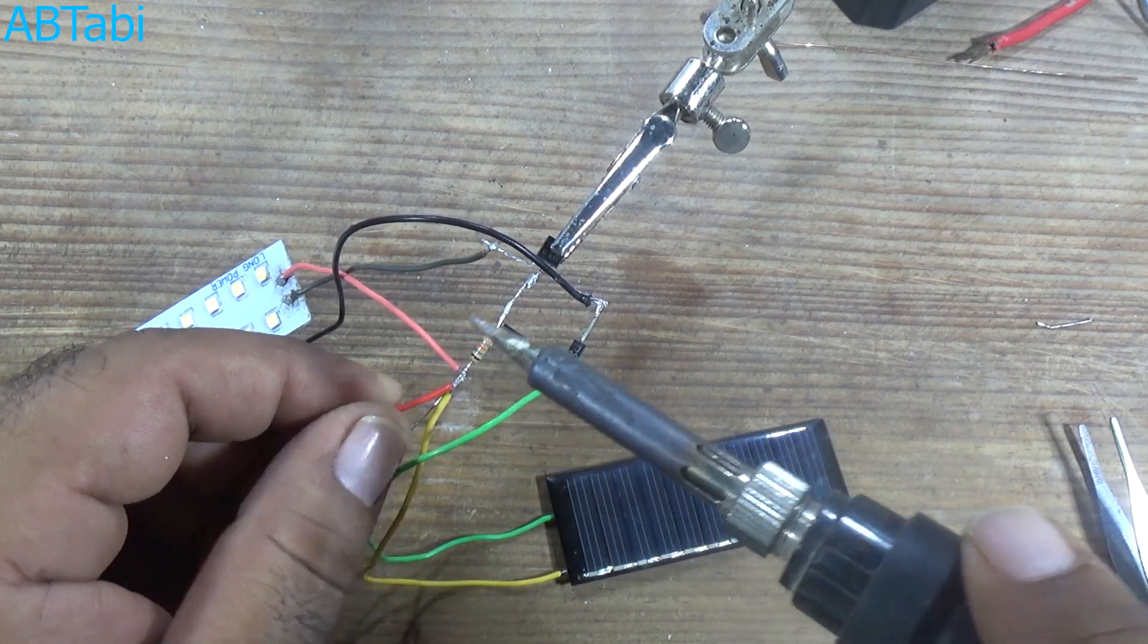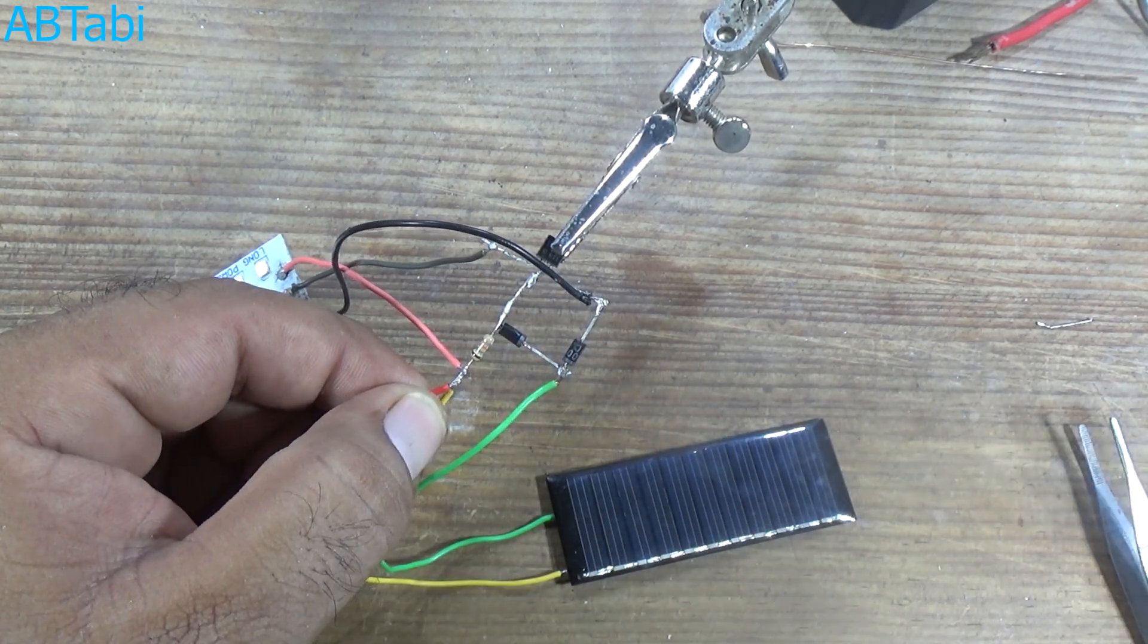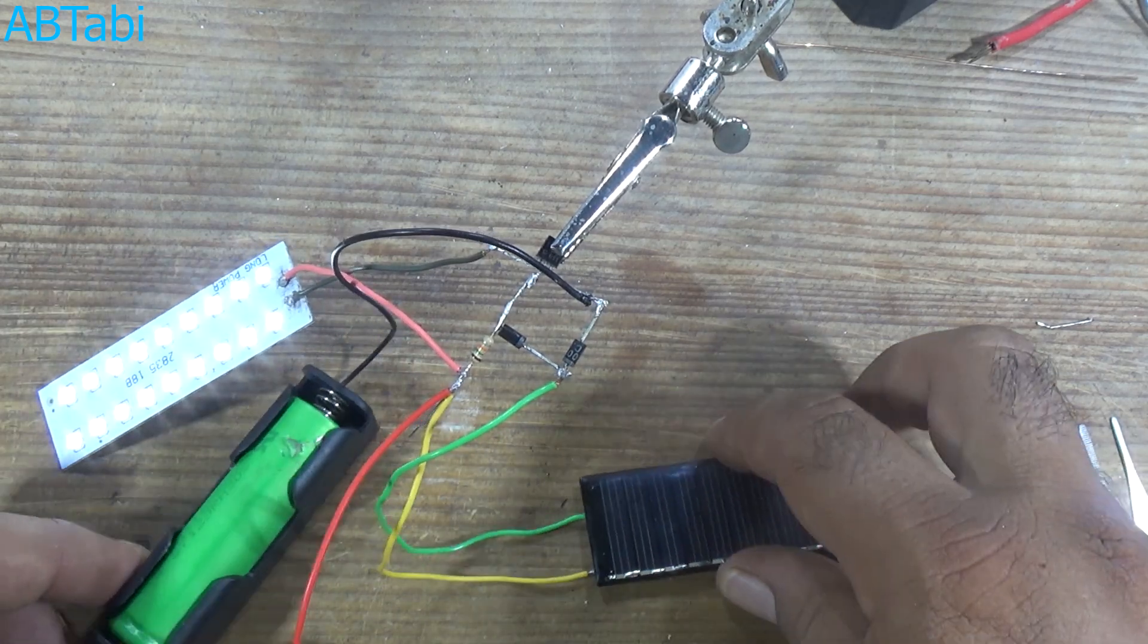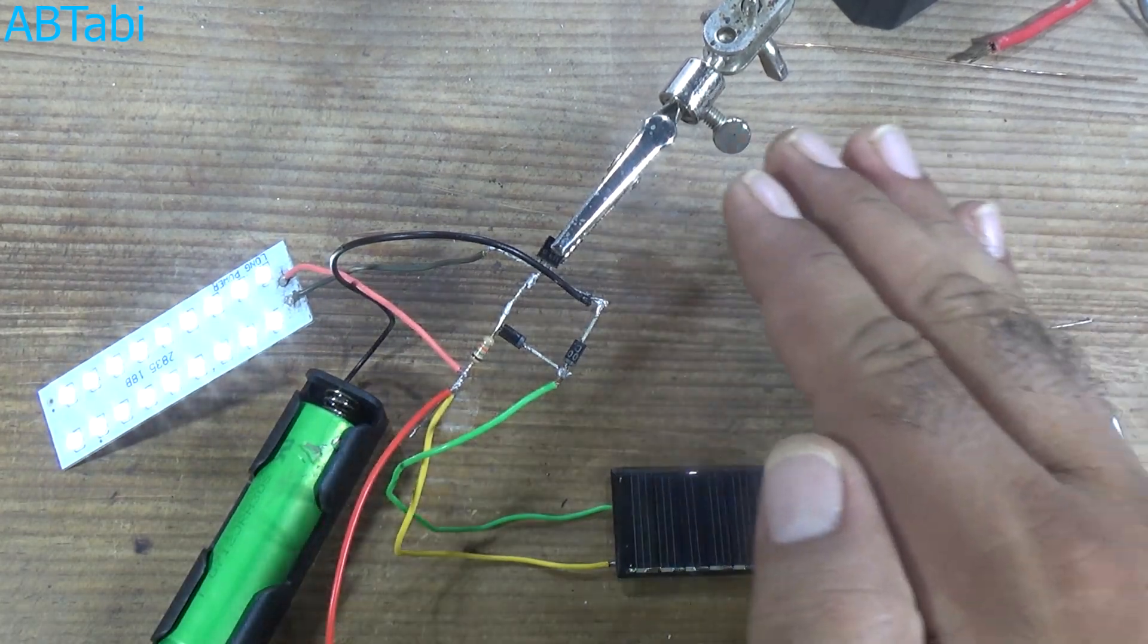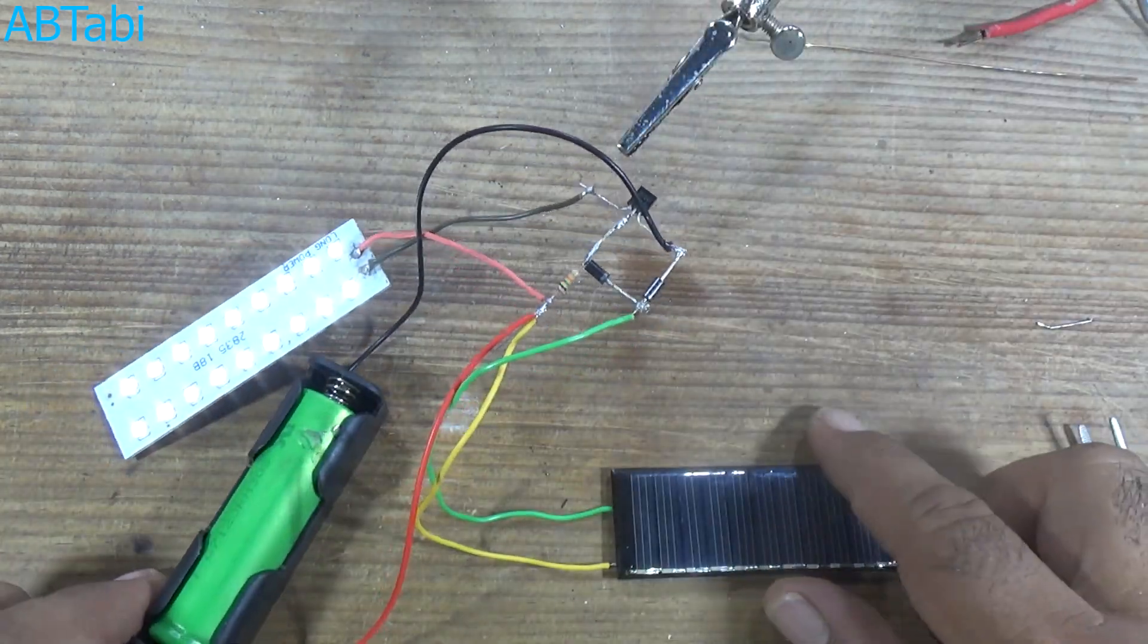In daylight, the solar panel automatically charges the battery. After daylight, the light will automatically turn on.